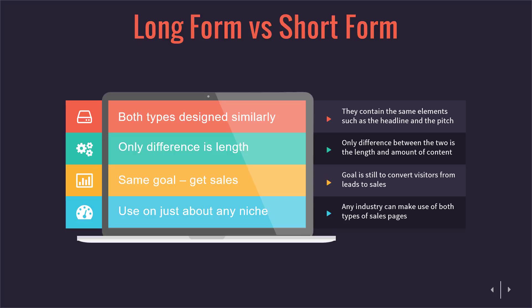There are two types of sales pages: long form and short form. Both types are designed similarly and contain pretty much the same elements — you have the headlines, the pitch, video, and the copy. The only difference is the length: short form is of course shorter, long form is of course longer.